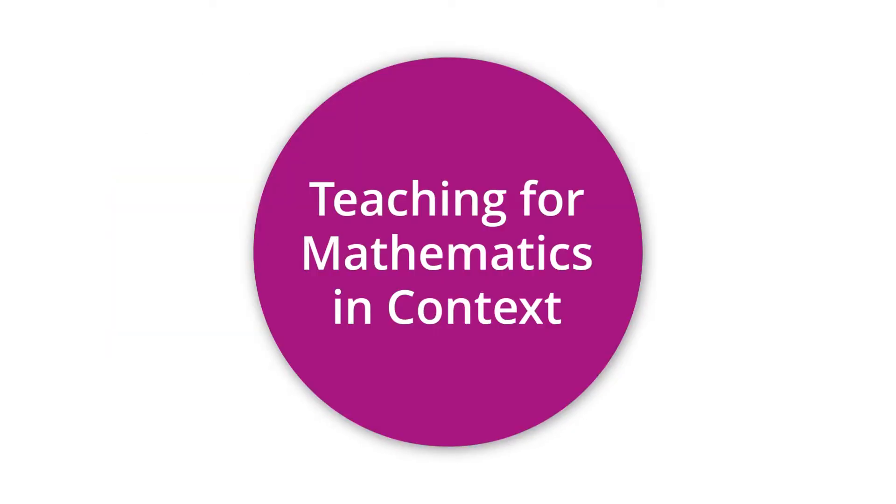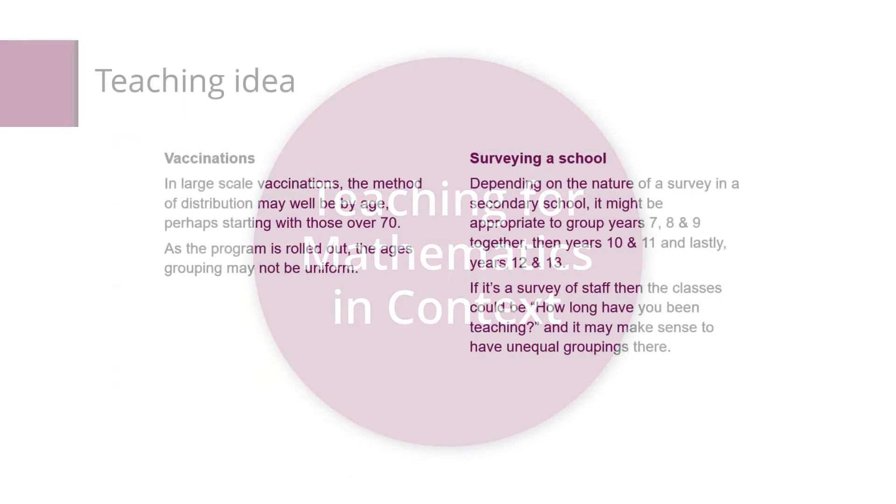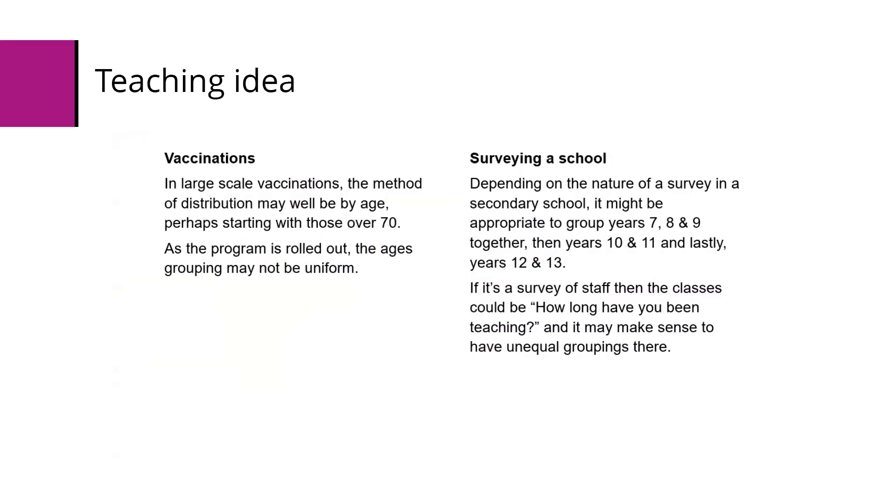On to my ideas for teaching this topic. We're going to focus on histograms where unequal class widths might be appropriate. For example, vaccinations. In large-scale vaccinations, the method of distribution could well be by age, perhaps starting with those over 70, and then as the program's rolled out, the age groups might not be uniform. It might be 70 and over, and then the next group could be people over the age of 60, so 60 to 70, maybe the next one would be 40 plus, and then 20 plus, and then maybe just mopping up maybe 15, 16 year olds upwards. Depends on the type of vaccination, of course.